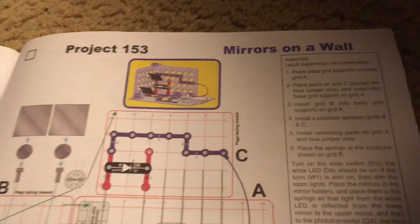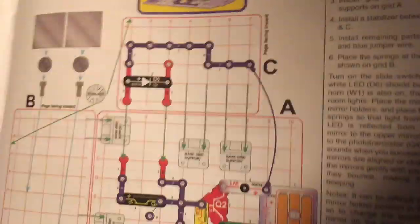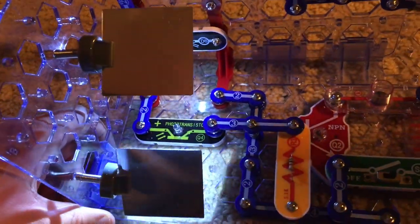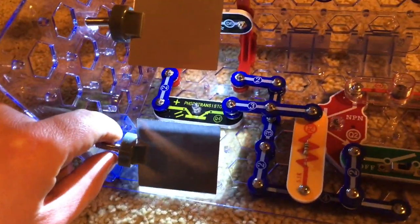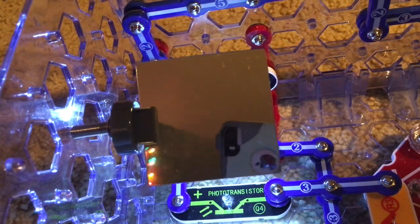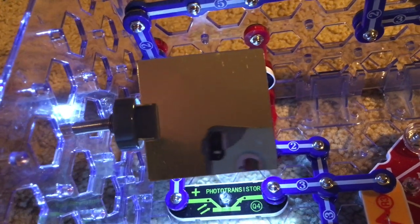Project 153, mirrors on a wall. This circuit is pretty complicated because the two mirrors are mounted in a vertical position. You have to put them on the holders, which will then be mounted on the springs to the base grid.